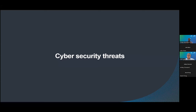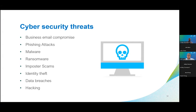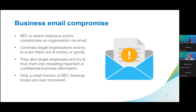Let's break down the most common types of cybersecurity threats. Understanding typical threats will be useful so you can see the particulars of your business and information systems. Examples include business email compromise, phishing attacks, malware, ransomware, imposter scams, identity theft, data breaches, and hacking. So what is a business email compromise, or BEC? BEC is where malicious actors compromise an organisation via email, targeting organisations to scam them out of money or goods, and tricking employees into revealing confidential business information.